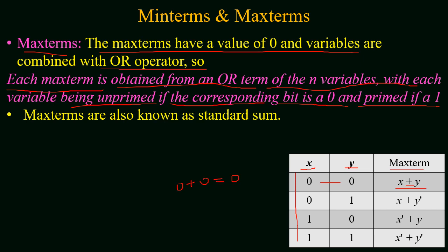For the second combination where x=0 and y=1, the max term is x+y', because y is 1 and adding 0+1 would give 1 which is not a max term value, so we use y'. In the third case where x=1 and y=0, the max term is x'+y, since x has a value of 1, x' is used. In the last case where both variables are 1, the max term is x'+y'. Max terms are also known as standard sums.